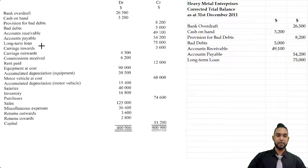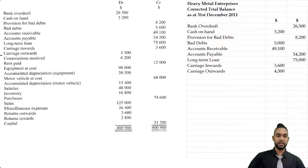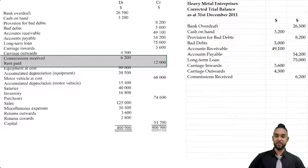I'm seeing two carriage items: carriage in and carriage out. They are both expenses — carriage in is when we pay for delivery of goods coming in, and carriage out is where we pay for delivery of goods going to customers. Either way they're both expenses and expenses have debit balances. Commission received is a revenue, so that should be credited — revenues have credit balances. Rent paid is an expense and expenses have debit balances.